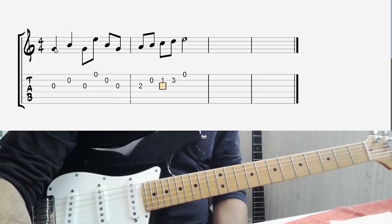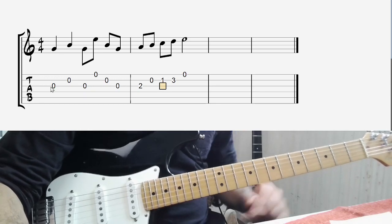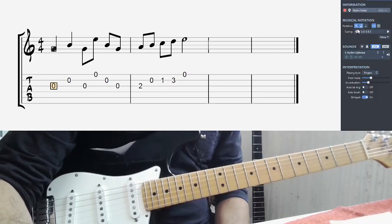And unlike the top one, which has got five lines, this one's got six lines. And each one of those lines is one of the strings on your guitar.